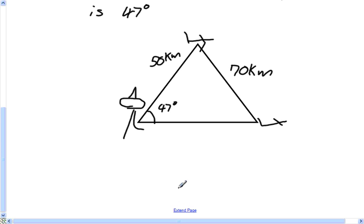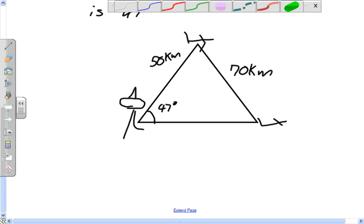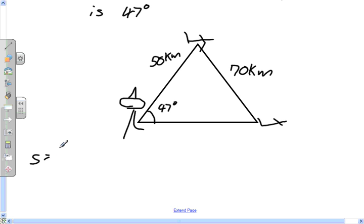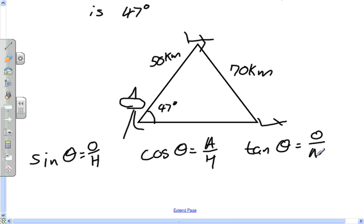When we did the quiz, you guys had only known SOHCAHTOA and Sign Law. So, first of all, sine theta is opposite over hypotenuse, cosine theta is adjacent over hypotenuse, and tangent theta is opposite over adjacent.